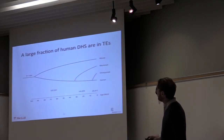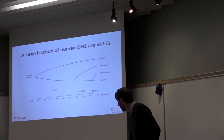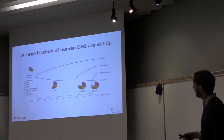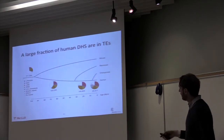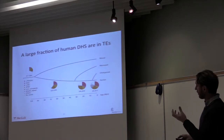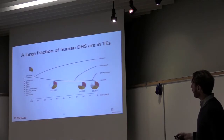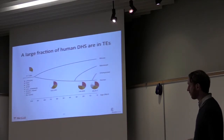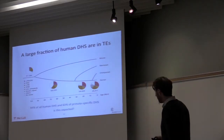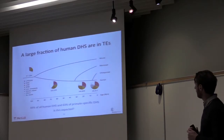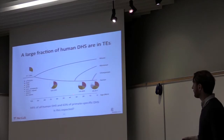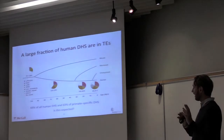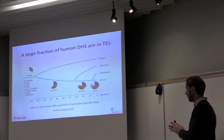If you overlay the annotation of repeats on top of this data, we see that even in the conserved enhancers — or conserved regions of open chromatin — there's of course some overlap with repeats, since repeats are everywhere. But as you move towards the regions of open chromatin, which is a functional assay of accessibility, the proportion actually derived from transposable elements increases quite significantly. The bottom line: 44% of all human open chromatin regions are in repeats, and this goes up to 63% if you're looking at primate-specific active regions.